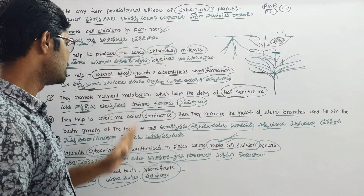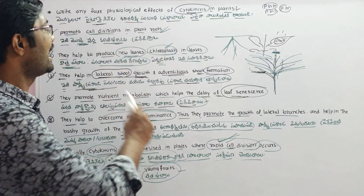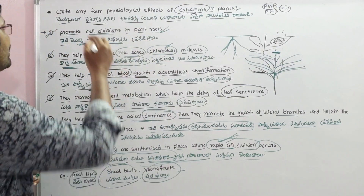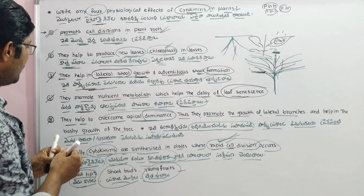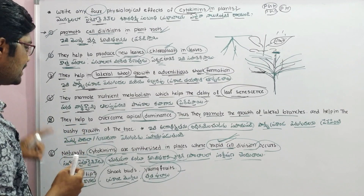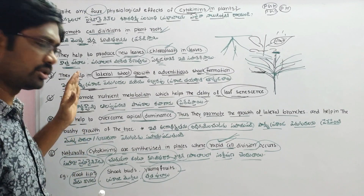These are the most important parts about cytokinins. This topic carries 4 marks, so knowing these physiological effects and synthesis locations is essential for the exam.